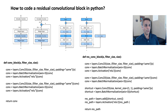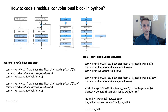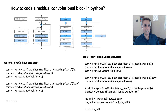A residual convolution block is very simple. You have the same structure: conv, batch normalization, activation; conv, batch normalization, activation; another conv, another batch normalization — but now I'm not doing activation yet. After the second batch normalization, we look at the x skip connection or shortcut. The shortcut is basically my input x going through a 1×1 convolution, then batch normalization, and then we add these two together — adding the conv output and the shortcut. Finally, all of this goes through the ReLU activation.